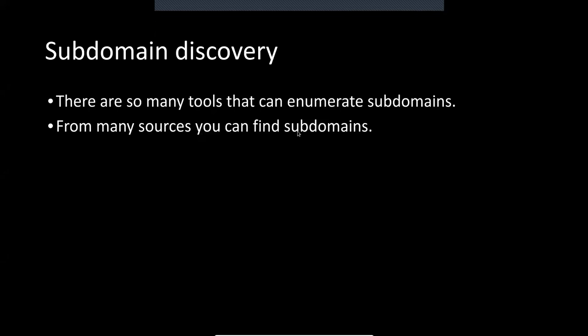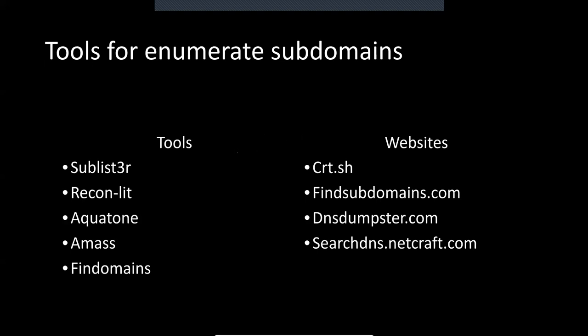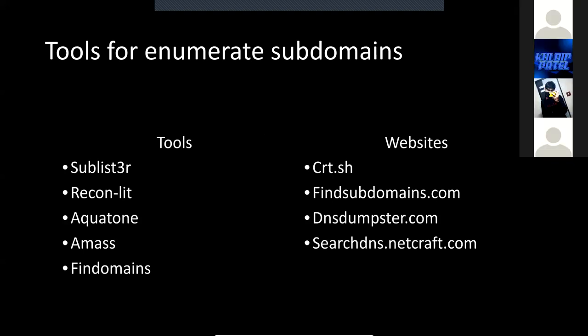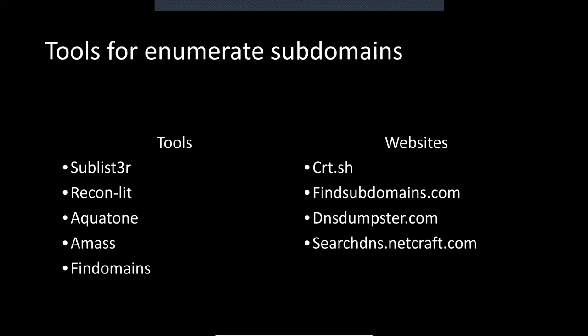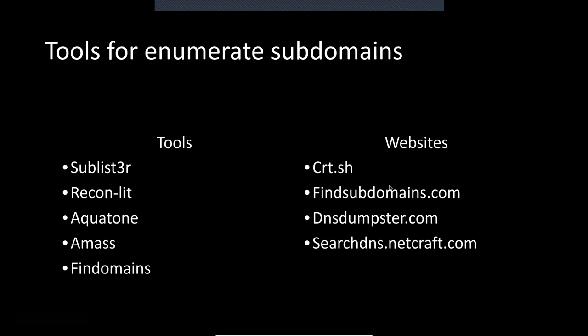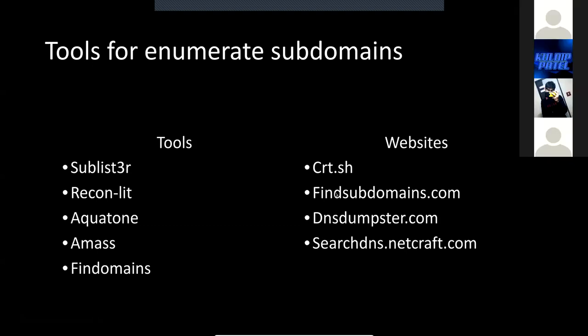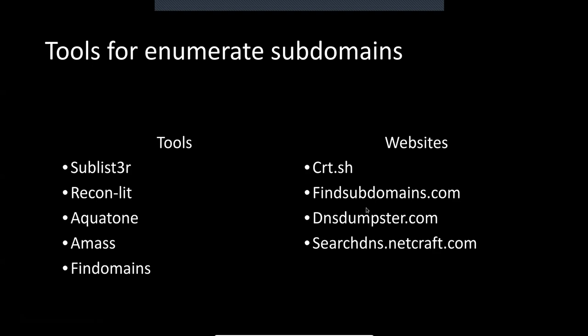Find more sources for subdomains. These are tools efficient for subdomain enumeration: first Sublister, second ReconLit made by me, third Aquatone — which is quite cool — fourth Amass, which is an amazing tool using a large number of search engines, and fifth finddomains. There are also websites like cert.sh, which gathers certificate information registered at the time of purchasing subdomains. After that, findsubdomains.com, dnsdumpster, searchdns, Netcraft, and similar sites.